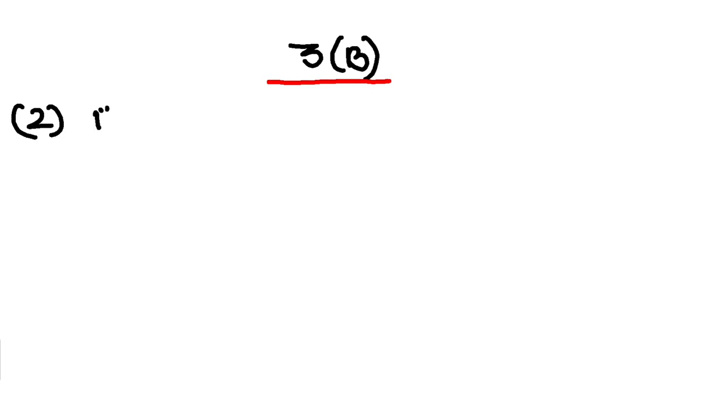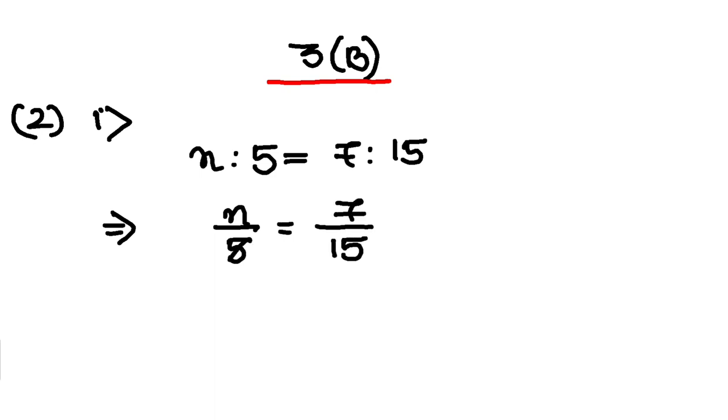The first one is n is to 5 is equal to 7 is to 15. This can be written as n by 5 is equal to 7 by 15, isn't it. 5, 15 three times. So my value of n is 7 by 3.